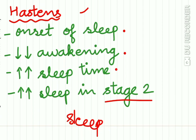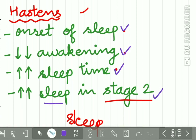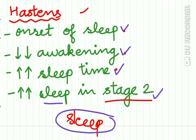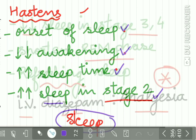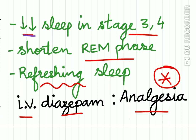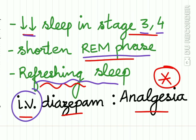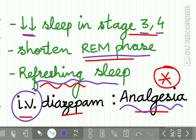Benzodiazepine hastens the onset of sleep, reduces awakening during sleep, and increases total sleep time. It increases sleep in stage 2 of the sleep cycle — which we studied in part 1 — and reduces sleep in stages 3 and 4. It shortens the REM phase and gives a refreshing sleep to the patient. IV diazepam injection may also be helpful in producing analgesia.